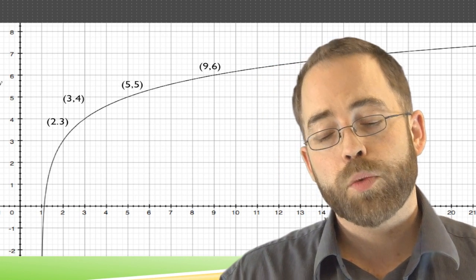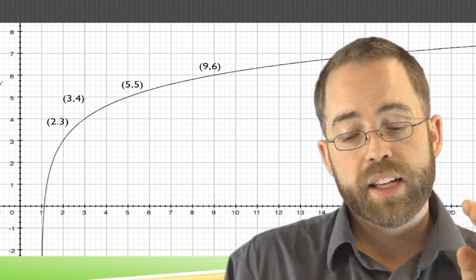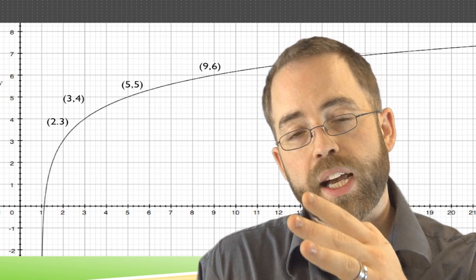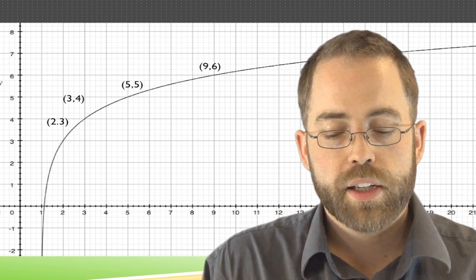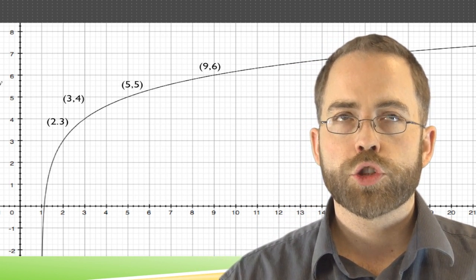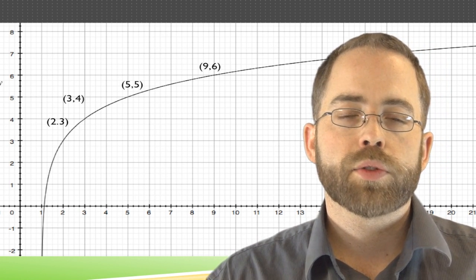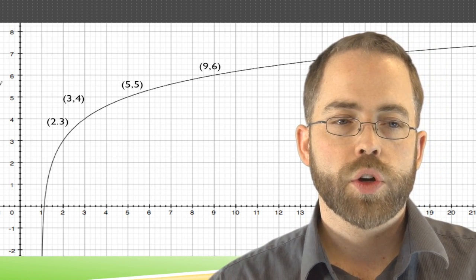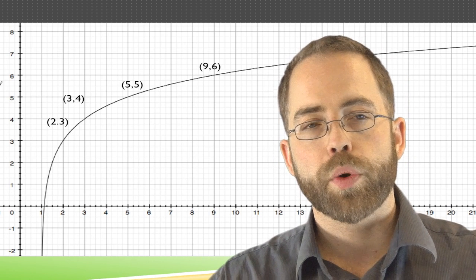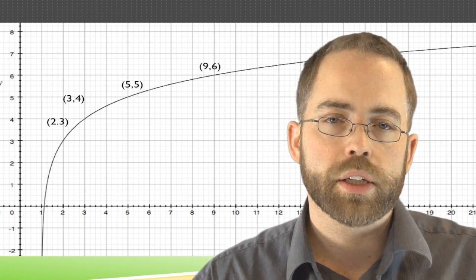Then in the next one, 5, 5 to 9, 6, it went right 4. So 1, 2, 4, aha, this is powers of 2. So the growth rate, the base of the log, is going to be 2.